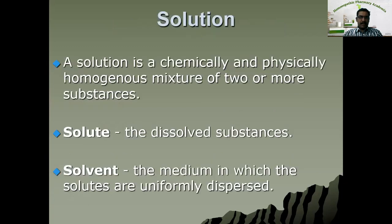The first one is solution. A solution is a chemically and physically homogeneous mixture of two or more substances. Here the solute means the dissolved substances and the solvent means the medium in which the solutes are uniformly dispersed. The substance which is dissolved in a solution is called a solute, and the substance in which a solute is made to dissolve is called a solvent.